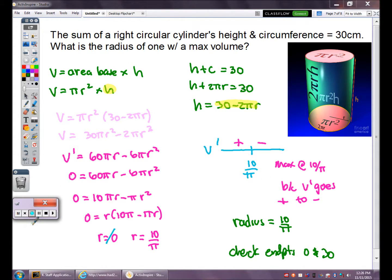It's a max because V prime goes from positive to negative. So my radius is 10 over pi. Don't forget, you should check your endpoints of zero and 30. The height and circumference have to add up to 30, so it could be zero or 30. We already know it can't be zero because I wouldn't have a radius. Same reason, I can't have 30. This one, to maximize your volume, you want a radius of 10 over pi.